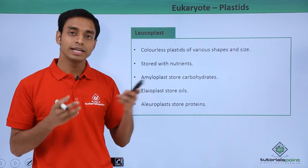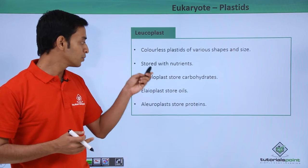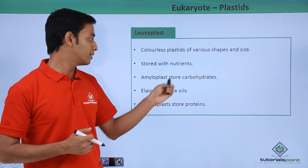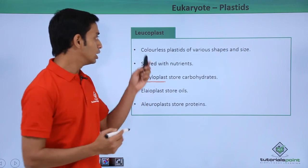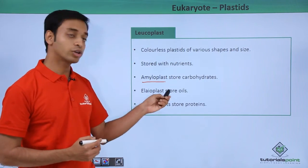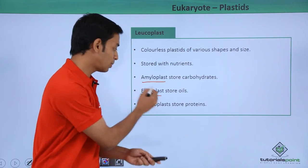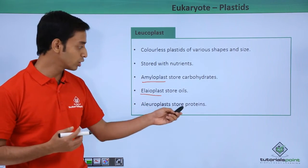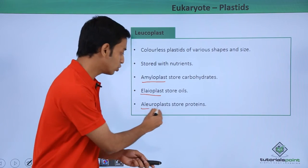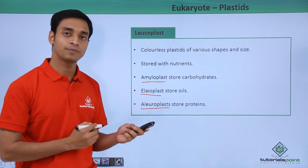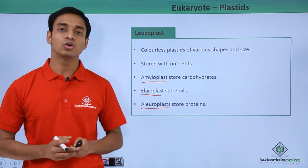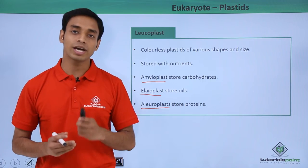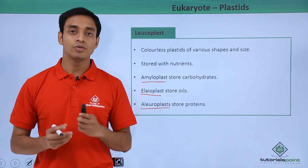For example, leucoplasts that store carbohydrates are known as amyloplasts. Leucoplasts that store oils are known as elioplasts. And leucoplasts that store proteins are known as aleuroplasts.